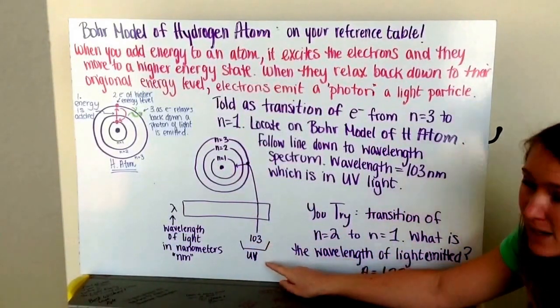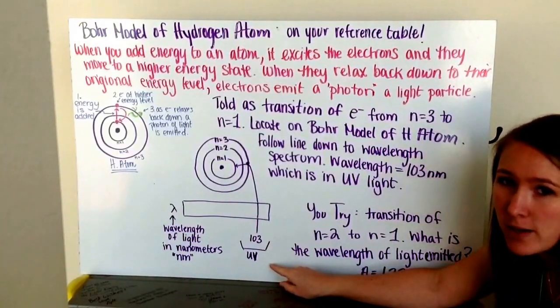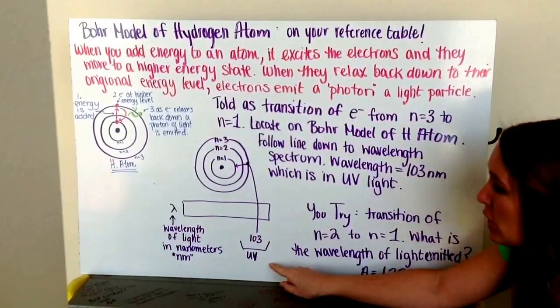Now, underneath that tells us what kind of light that is. In this case, one hundred and three nanometers is in the UV light.